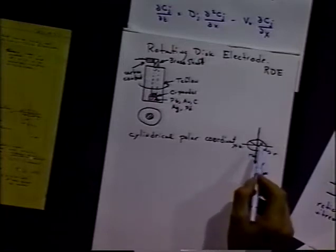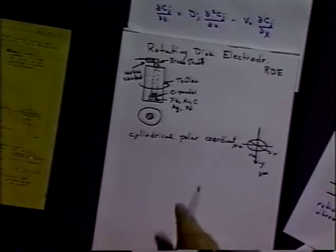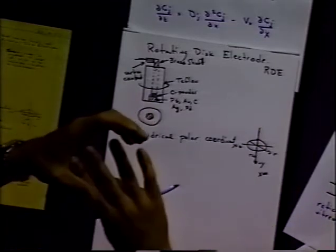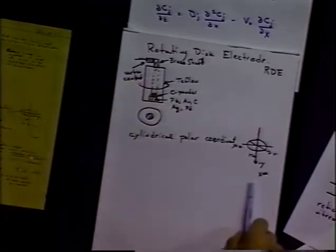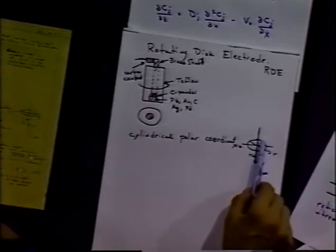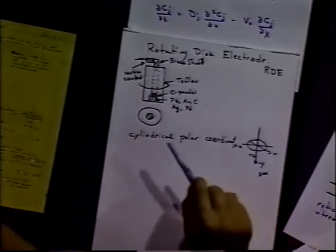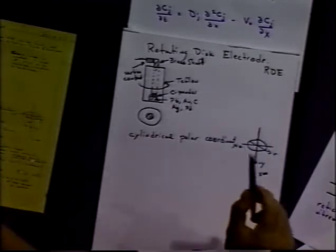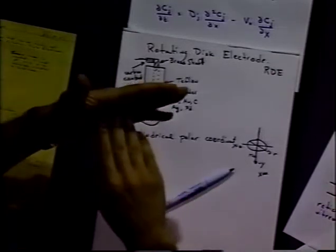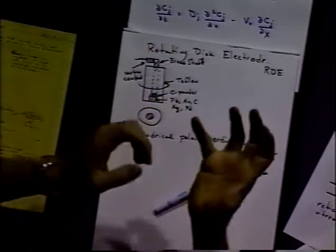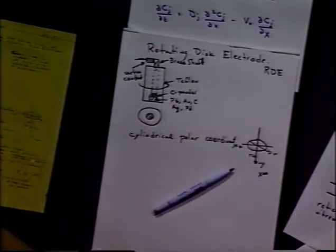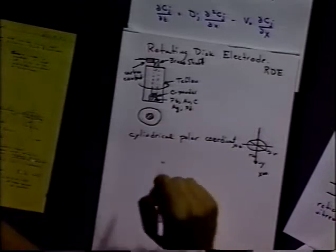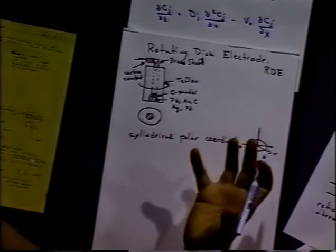So y equals zero at the electrode surface, y equals infinity as we extend out. Now at the surface of the disk, when we rotate this, what's going to happen? Solution is sucked up into the disk. As it's sucked up, we get a flow in the y direction. At the surface, the relative velocity of particles relative to the disk surface is zero, because as solution particles hit the disk, they're dragged along by frictional and viscous forces. The velocity with respect to the solution may be non-zero, but with respect to the disk is zero. So the solution is being dragged along the disk surface.